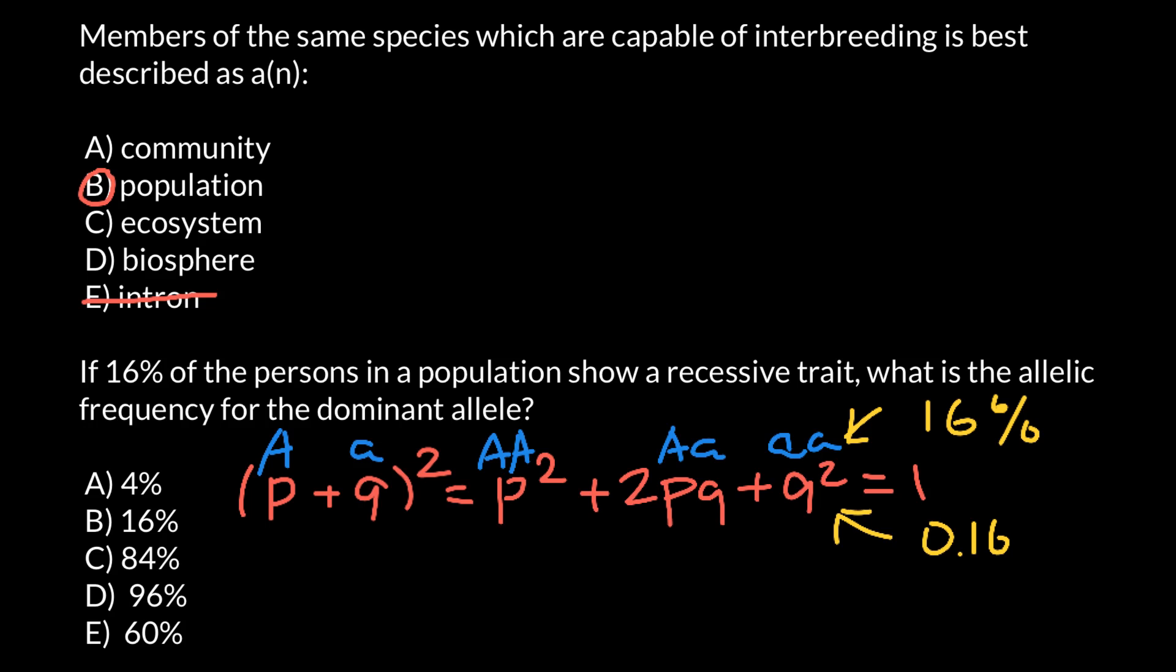By the way, these two genotypes would make one phenotype, the dominant phenotype, and this genotype would make another recessive phenotype.